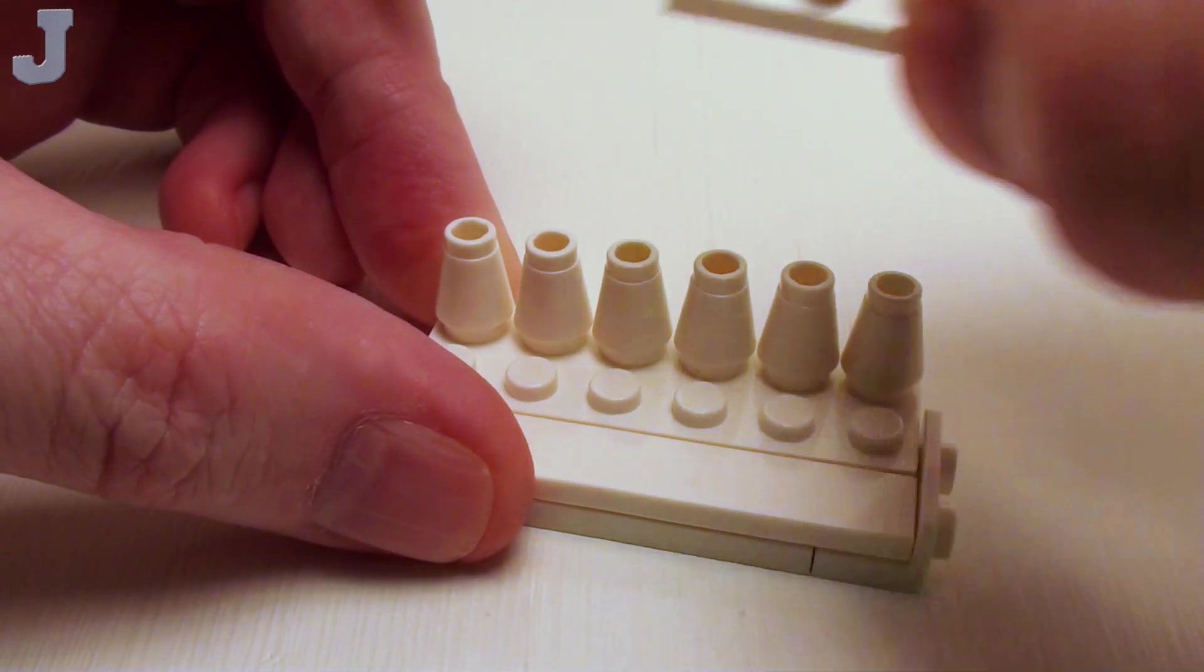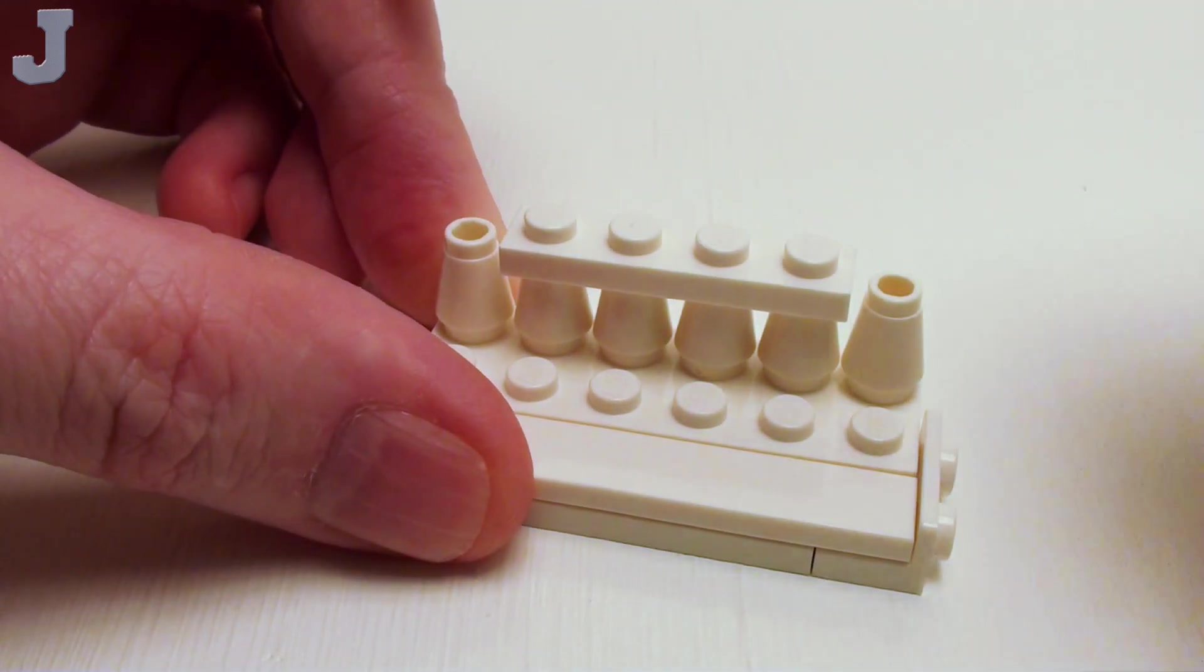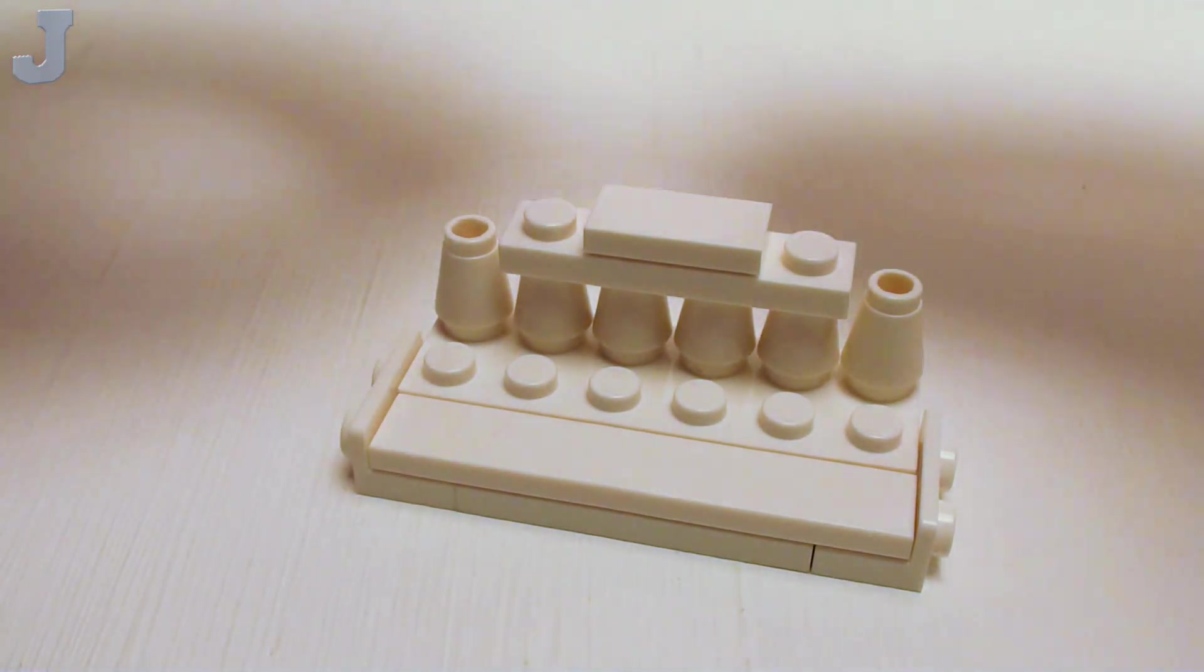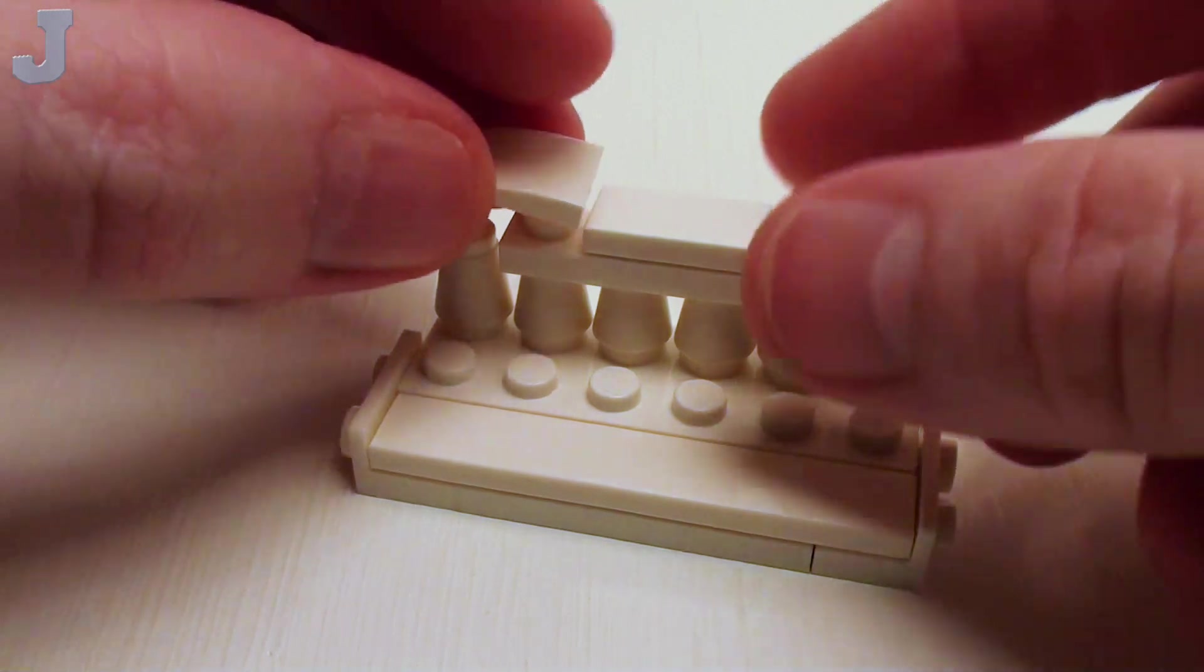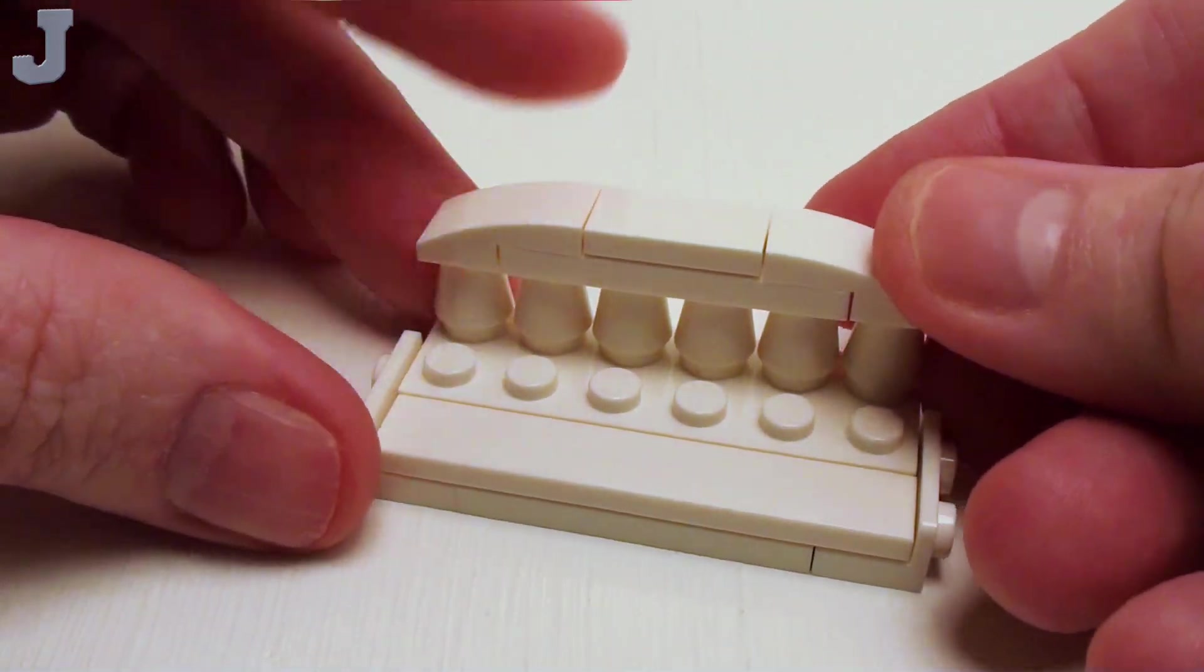And then right in the center, a 1x4 plate. And in the center of that, a 1x2 flat tile. Then I'm going to round off the corners with a pair of 1x2 by 2/3rds plate with bow.